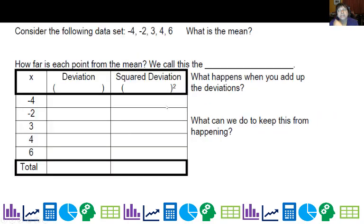Consider the following data set: negative 4, negative 2, 3, 4, and 6. What's the mean? Add them up, divide by 5. There are 5 data points, and you get 1.4.